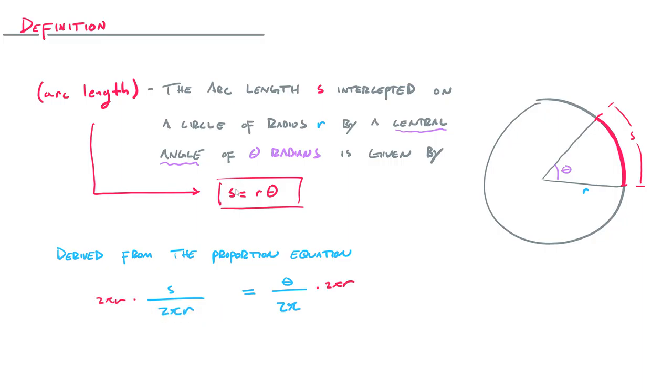So to isolate s, I multiplied both sides by two pi r and similarities canceled. On the left, the whole denominator canceled. So we just got left with s. And on the right, the two pi canceled. So we were left with theta times r, which is the same as r times theta since multiplication is commutative.